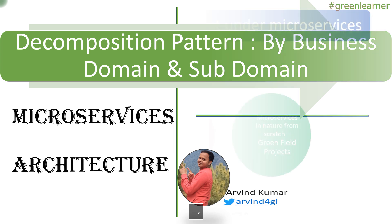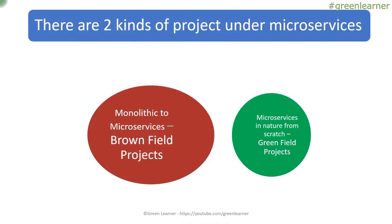Before moving to the decomposition pattern, let's see the kinds of projects that come under microservices. The first kind is monolithic to microservices, and the second is microservices from scratch. When you have a monolithic application and convert it to microservices, those are called brownfield projects. When you start creating a software application from scratch thinking in microservices, those are called greenfield projects.